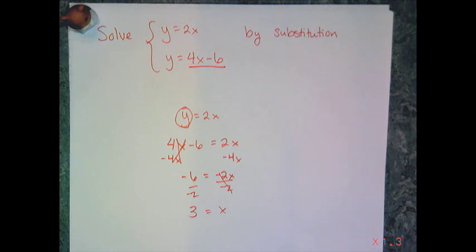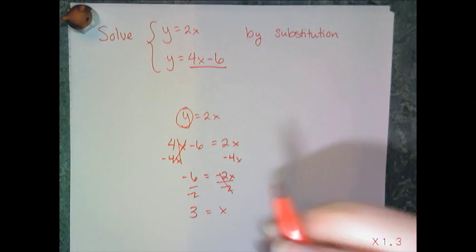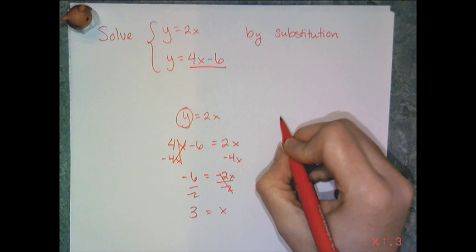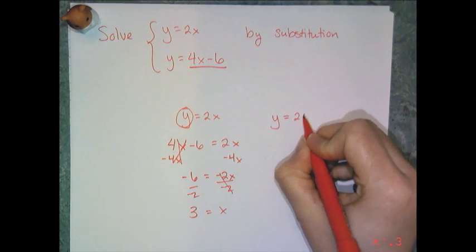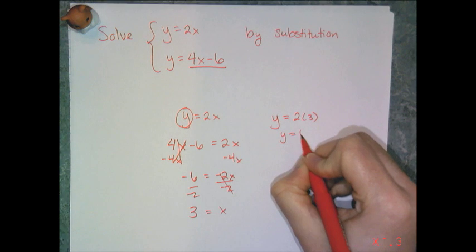I'm not done yet though, because I need to find both x and y. So I can take either one of these equations and solve for y. And I'm going to use the first one, so y equals 2 times 3, which means y equals 6.